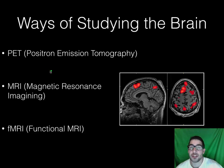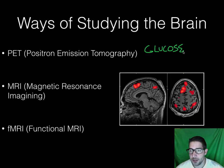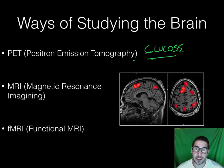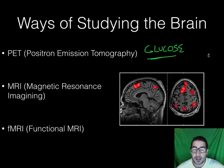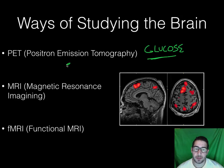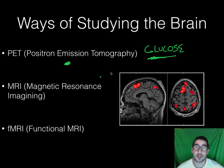A PET scan — positron emission tomography — looks at glucose. Your brain loves glucose. All the food you eat eventually gets turned into glucose, and your brain uses that as energy. The neurons in your brain are like little glucose hogs — whenever something is activated, that part of your brain uses up more glucose because it's working. So when you're using a PET scan, they might ask you to think of sitting at the ocean, and the part of your brain activated by that thought will start to light up, using up more glucose. It tells us what parts of your brain are being activated at different times based on the glucose being consumed by the neurons.